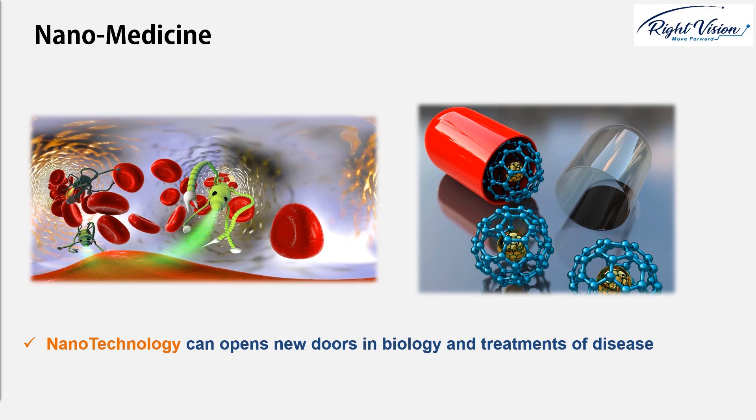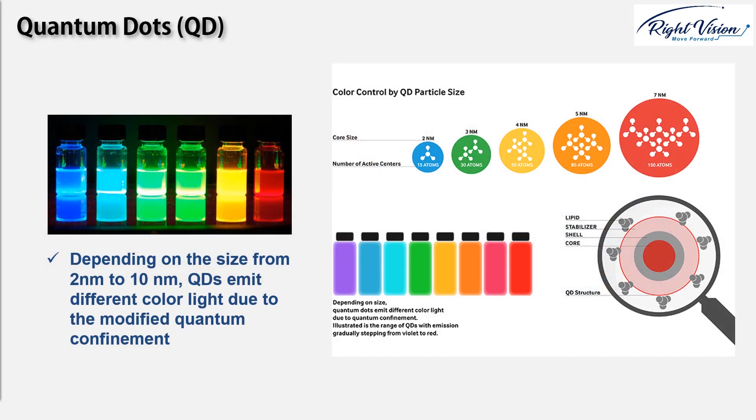Another example of nanotechnology is the quantum dot. Gold can behave quite differently at the nanoscale compared to the bulk level. If you solve different sizes of gold particles, the color that emits from the liquid can change from very bluish to reddish, depending on the size, from like 2 nanometers to 10 nanometers. Quantum dots emit different color light due to the modified quantum confinement.